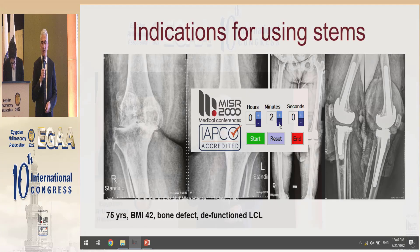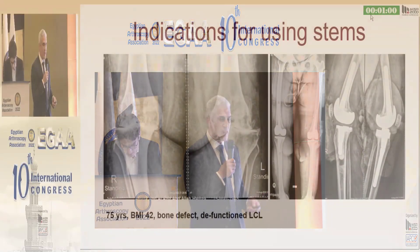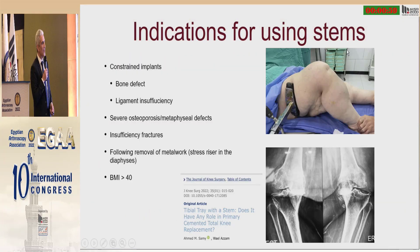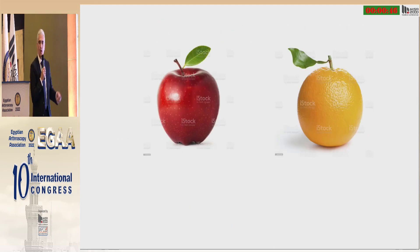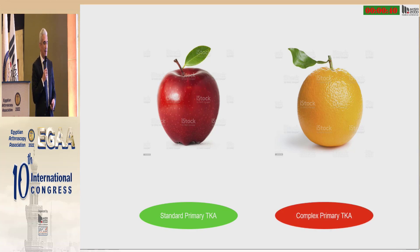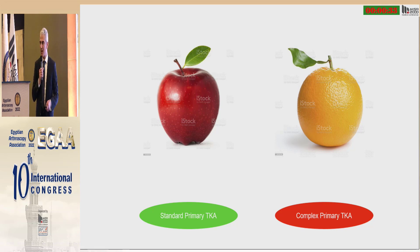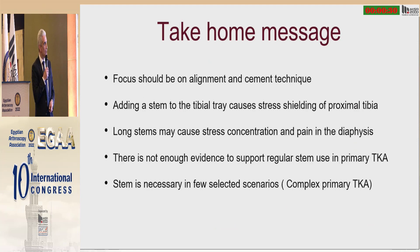What we have to differentiate is whether we're dealing with a primary knee or a complex primary knee. In an obese patient with a bone defect, you may be justified to use a stem — but not in every primary knee. We shouldn't compare apples to oranges: there is the standard primary total knee and the complex primary, and in the complex primary there is an indication for a tibial stem rather than it being a standard procedure used in every patient.